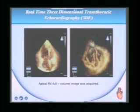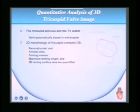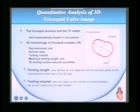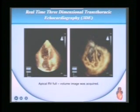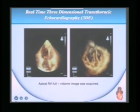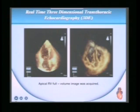This is the apical RV full-volume view. On 3D, you take a 3D matrix zoom or an apical RV full-volume image, and this is how you acquire the full-volume image — that is the mitral valve, that is the larger tricuspid valve, and that is the LV and the RV. That is the RA and that is the RV, and that is what you see as the tricuspid valve there.